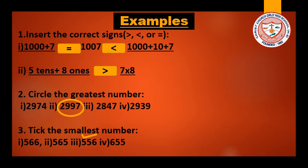Question number 2: 5 tens plus 8 ones means 58, and 7 times 8 means 56. So you can easily understand which is the bigger number — we put a greater-than sign. Number 2: Circle the greatest number. Look at the numbers very carefully, find out which one is the biggest, and follow the rules of comparing two numbers. Number 3: Take the smallest number — the smallest number here is 556.